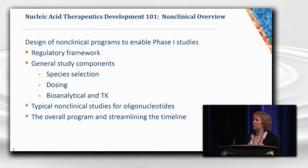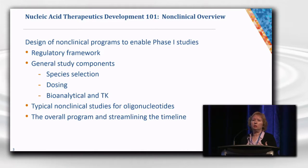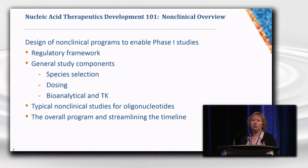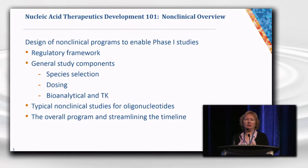Here is an overview of what I'm going to talk about today. I'll start with a discussion of the regulatory framework, and then some general study components applicable to most study types. Then I'll touch on some typical study outlines for the non-clinical program with an oligo. And last, I'll talk about how this impacts the overall development program, and importantly, are there ways to speed things up?